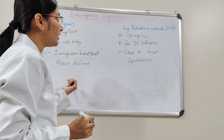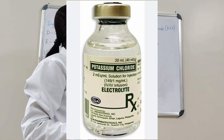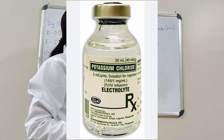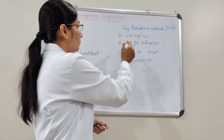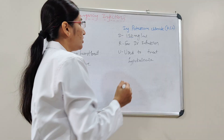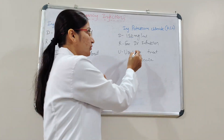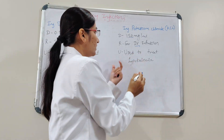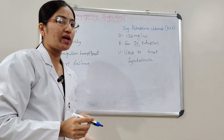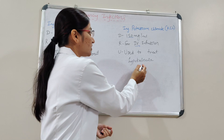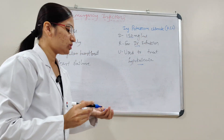The fourth injection is Potassium Chloride. The dose is 150 mg per ml, route is intravenous infusion. It is used to treat hypokalemia.